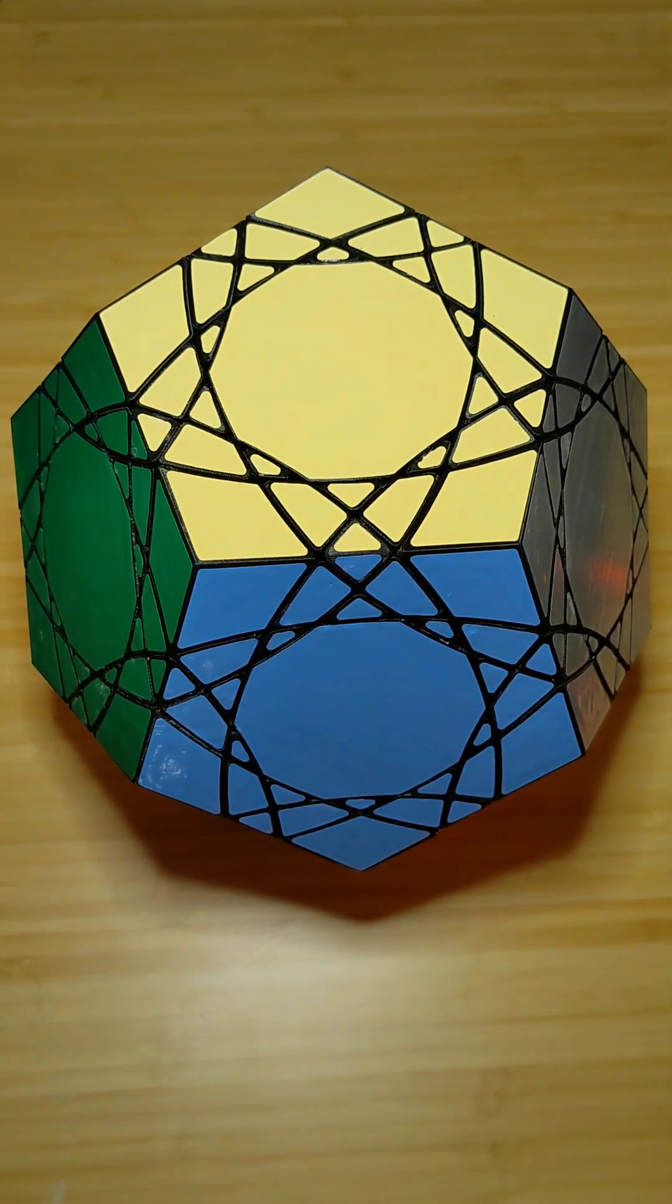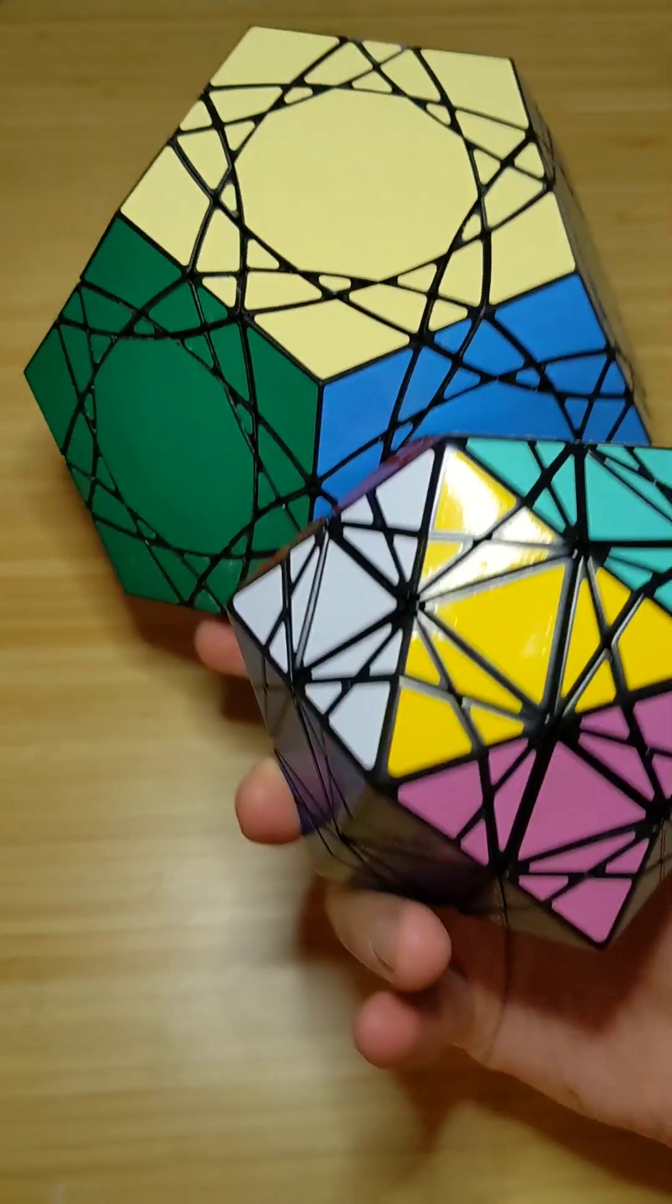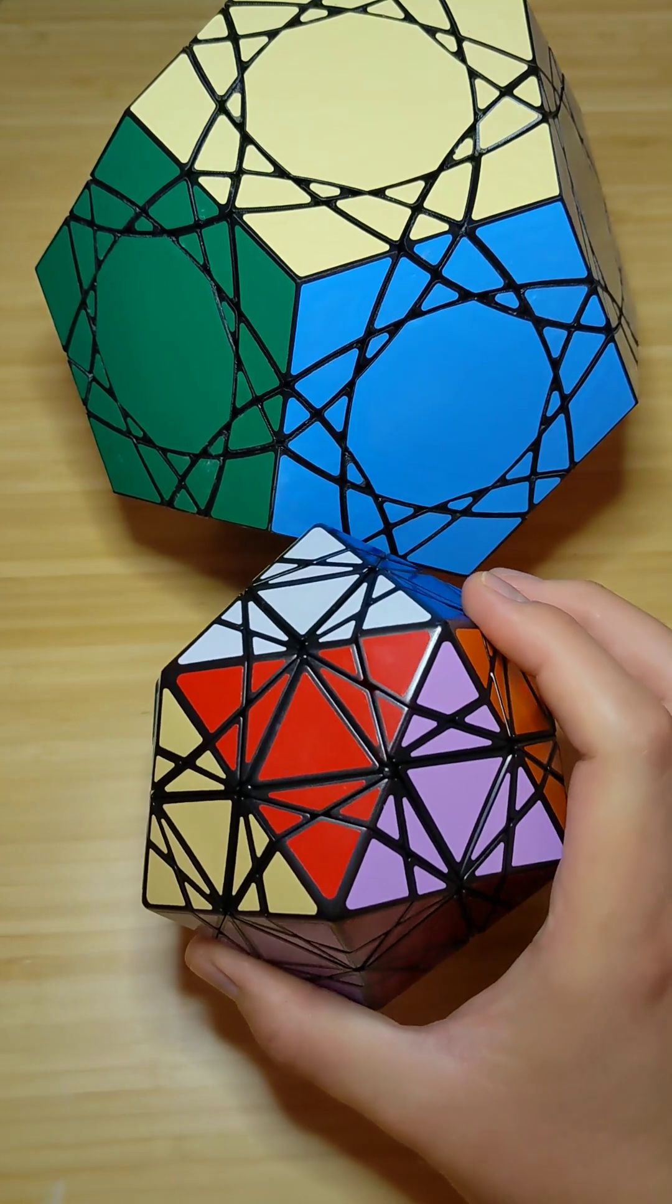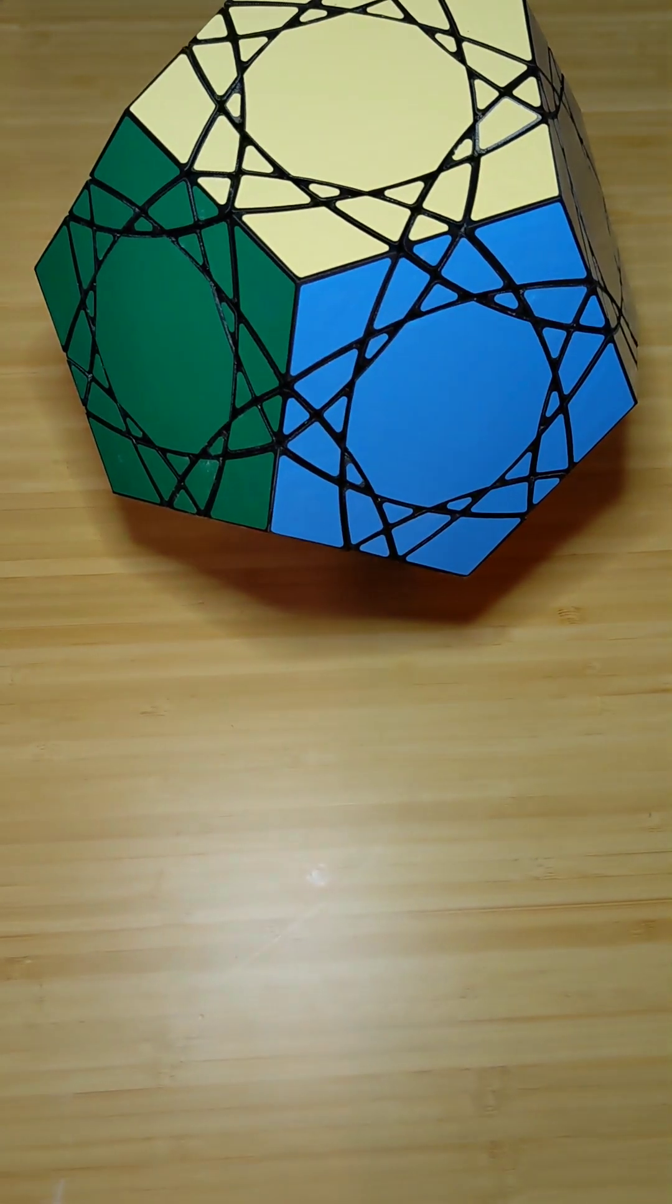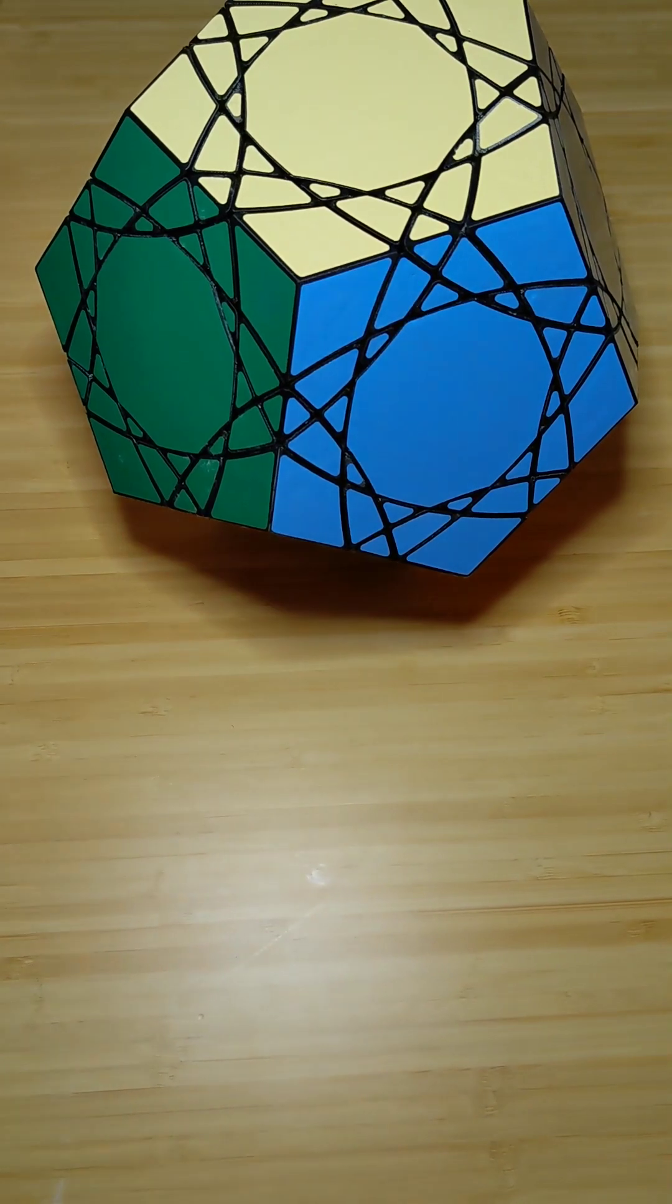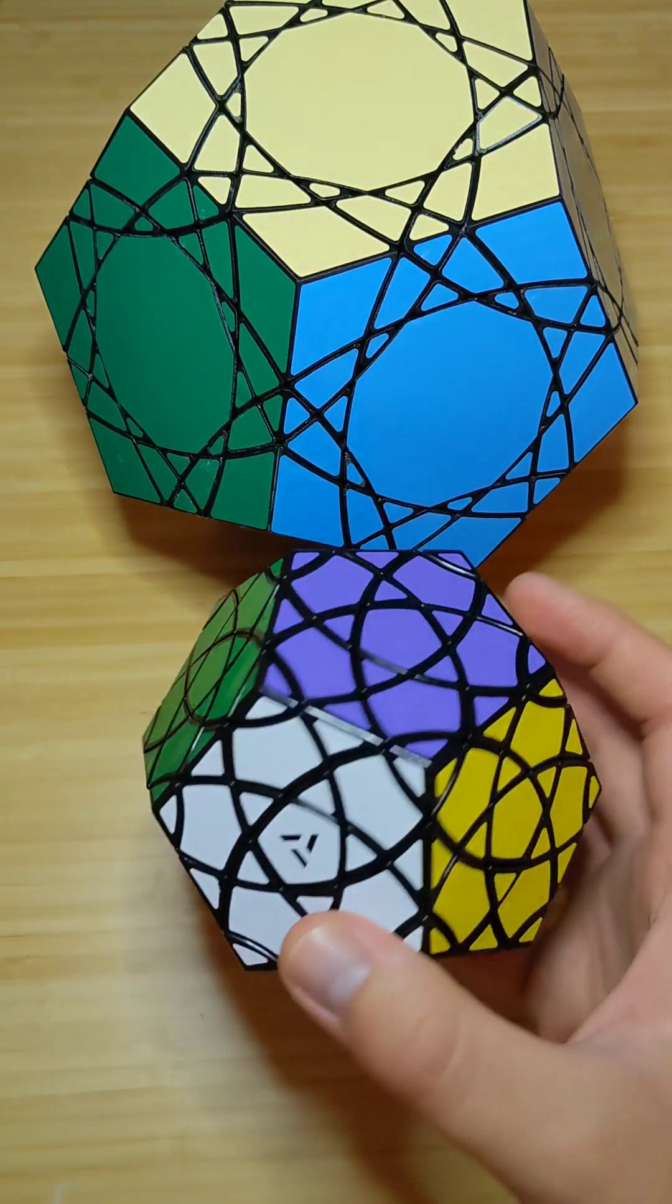Most of the series was never mass-produced or even made available as custom puzzles. There are a few that were mass-produced, though. For example, Eitan's Star. I'll scoot that back. Eitan's Star is a Radiolarian 4. And then the Bohemia Dodecahedron 2. This is a Radiolarian 3 in the shape of a Dodecahedron.